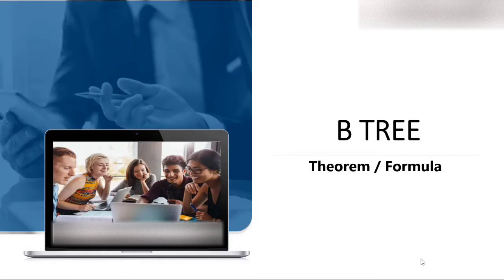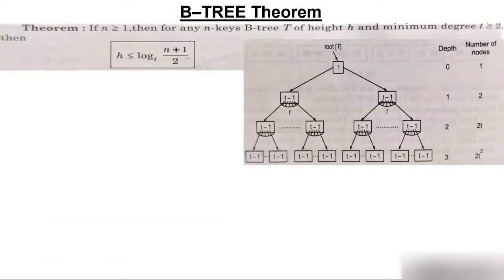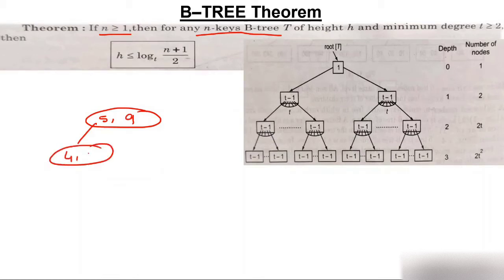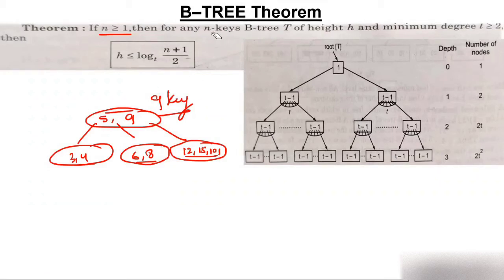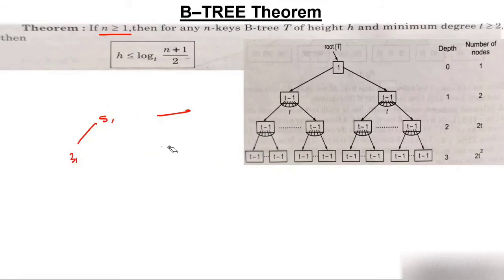Today we are discussing a B-tree theorem and formula. The formula states: if n is greater than 1, then for an n-key B-tree — a B-tree having total n keys — we examine height h. For example, consider a tree with keys 5 and 9; elements less than 5 are 3 and 4, between 5 and 9 are 6 and 8, and above 9 are 12 and 15. That gives 9 keys total — this is a 9-key B-tree.